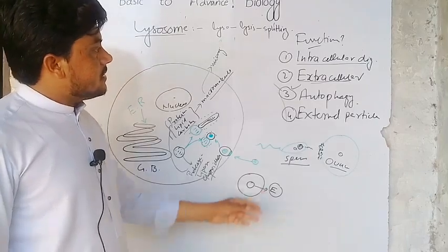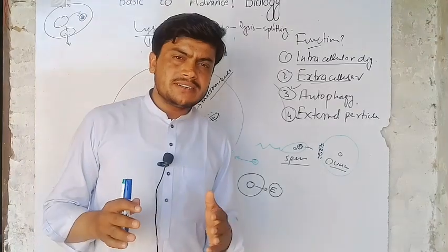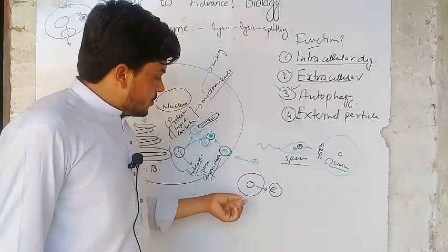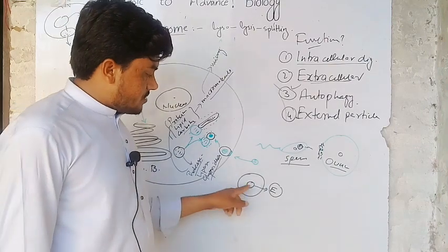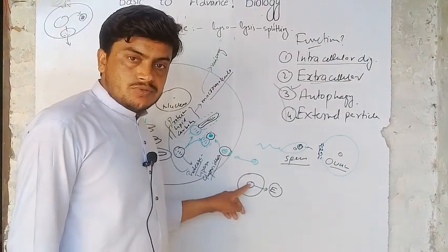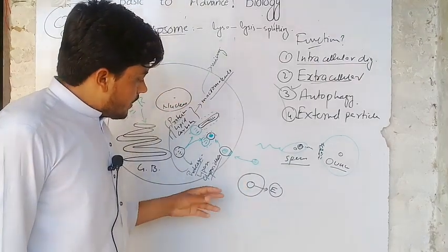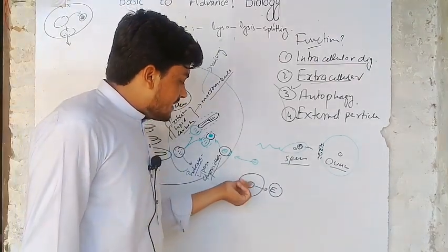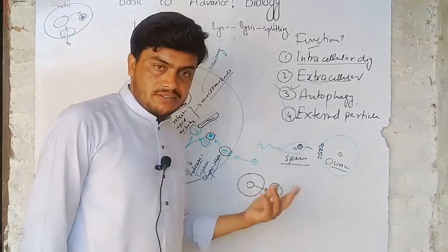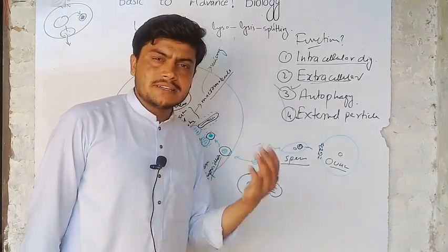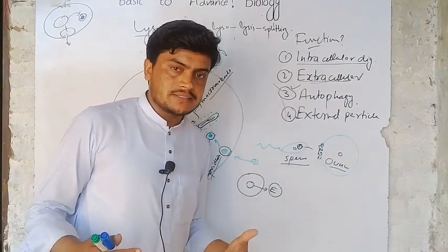Second one is extracellular digestion. Extracellular digestion is very simple and you can understand it easily. Extracellular digestion is that digestion which is done by the lysosome outside of the cell. This is possible when the lysosome releases its enzymes into the environment outside of the cell and digests something outside of the cell. This is called extracellular digestion.